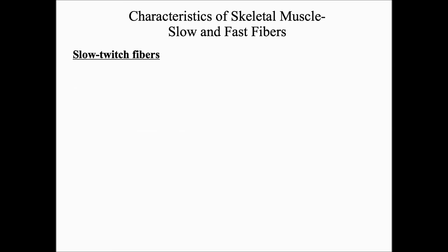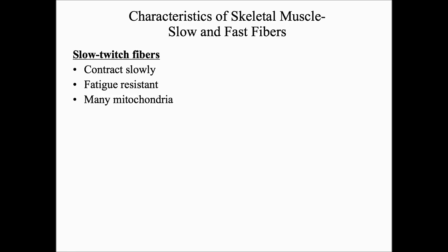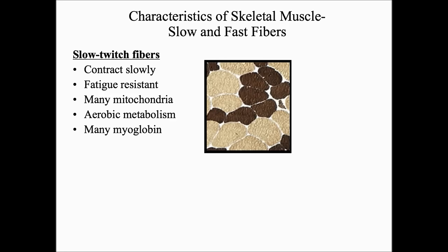Slow-twitch fibers contract slowly, which means they don't get tired as easily — they're fatigue-resistant. Because slow-twitch fibers don't fatigue so easily, they have many mitochondria. Slow-twitch fibers undergo aerobic metabolism, meaning they break glucose down in the presence of oxygen to form ATP. Slow-twitch fibers also have many myoglobin, meaning they need a constant source of oxygen. In the illustration, slow-twitch fibers are the dark fibers, and they are best for endurance sports such as marathon running.